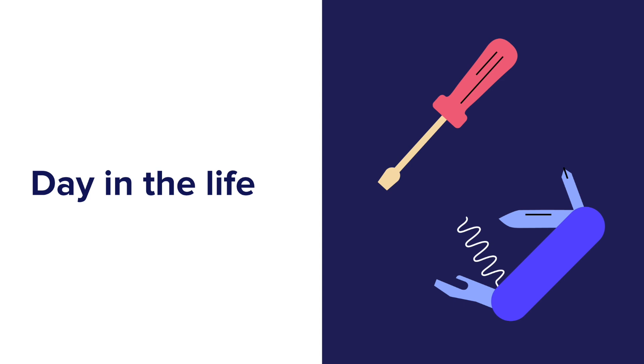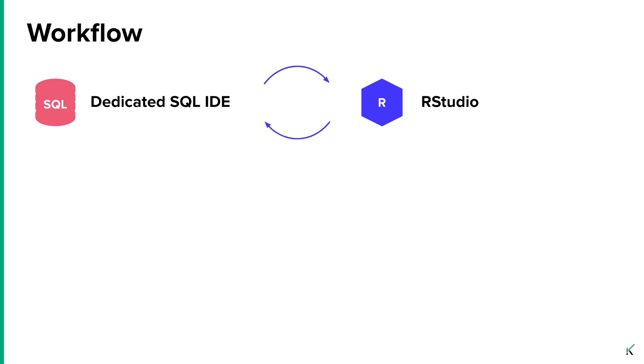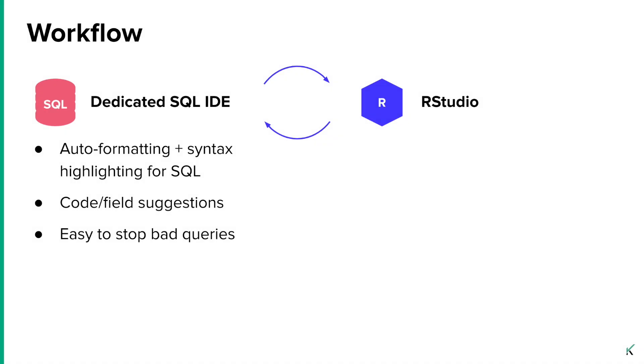I've talked a lot about all these cool things about R and SQL together, but what does that look like in real life? I can only really speak to my experience and the experience of my colleagues at Riskified. On a regular day, I'm often switching between a SQL IDE and RStudio. I did just talk about all these SQL things you can do within RStudio, but some are still not quite that mature. I really like using the SQL IDE for all the extra auto-formatting, highlighting, code and field suggestions — so I don't have to remember those long table names from memory. Also, it's really easy to stop bad queries in a dedicated IDE; sometimes in RStudio it gets stuck and I end up having to force quit and start over.